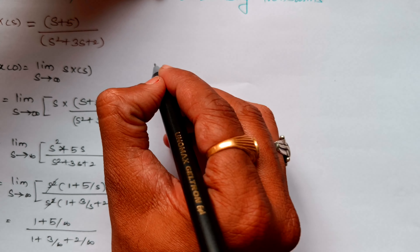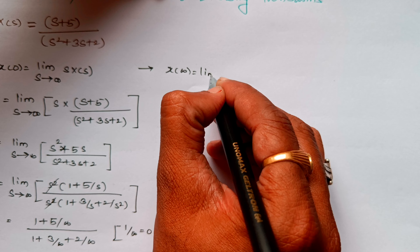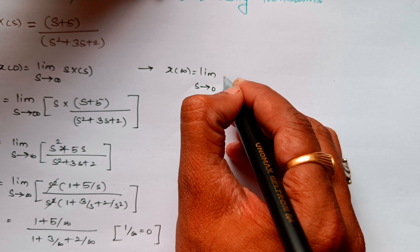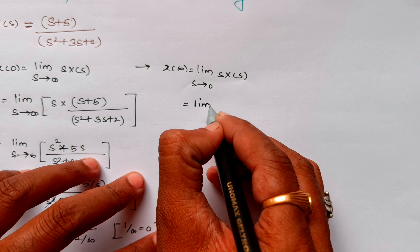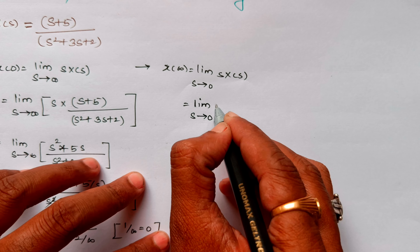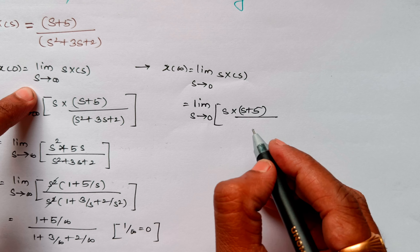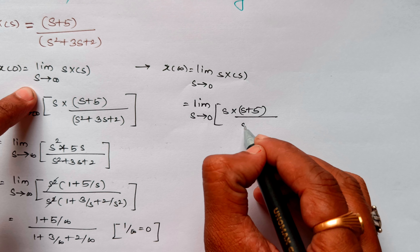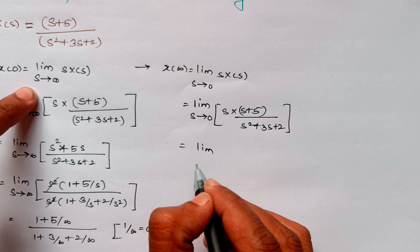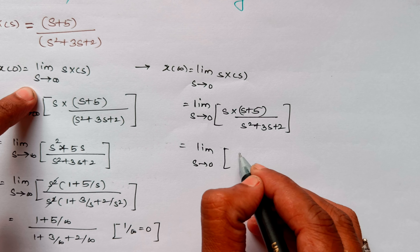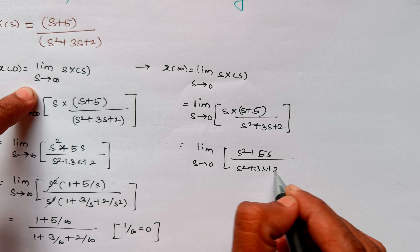Now in the same fashion we will find the final value. x(∞) will be: limit as s tends to 0 of s into X(s), which is s into (s+5) divided by (s²+3s+2). When we multiply all the terms we will get (s²+5s) / (s²+3s+2).